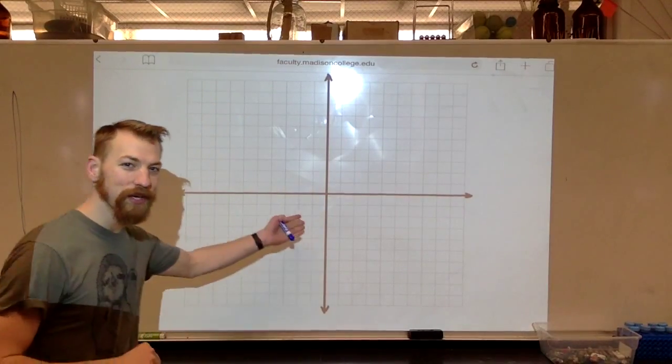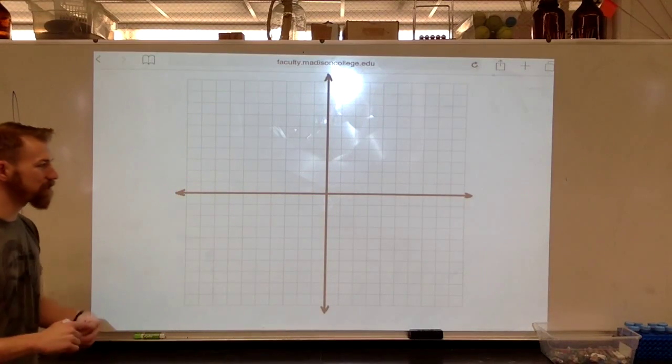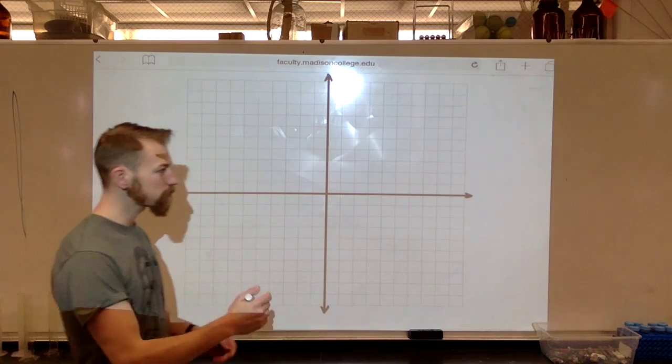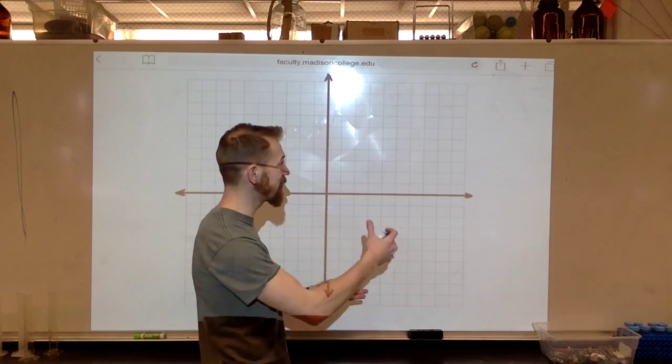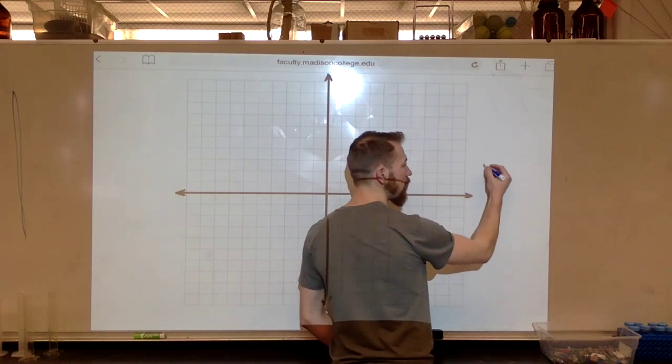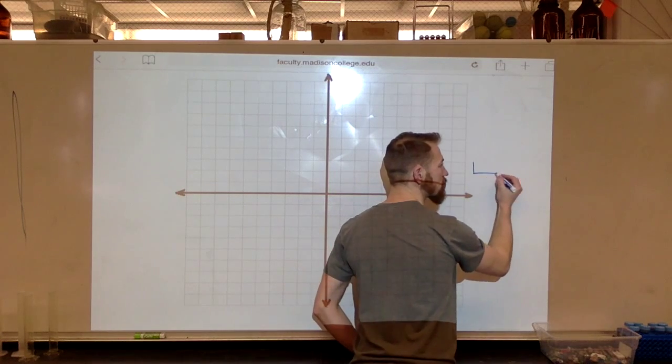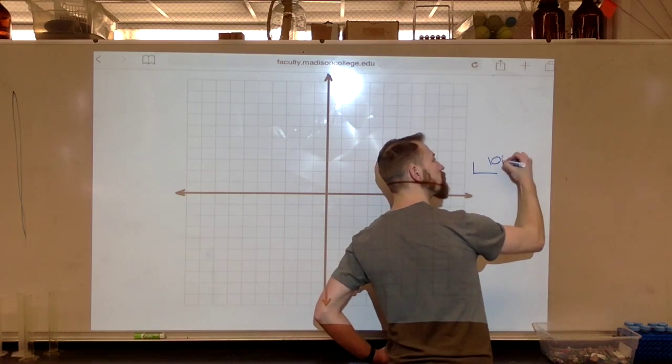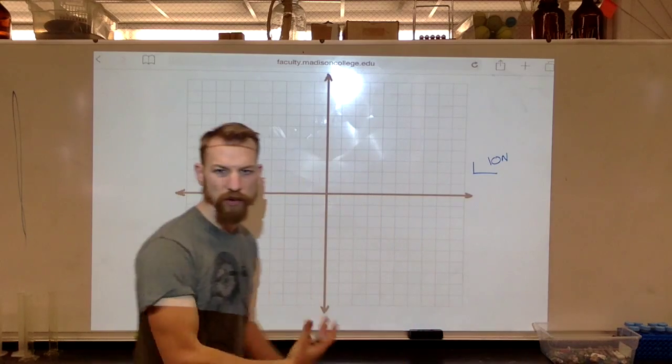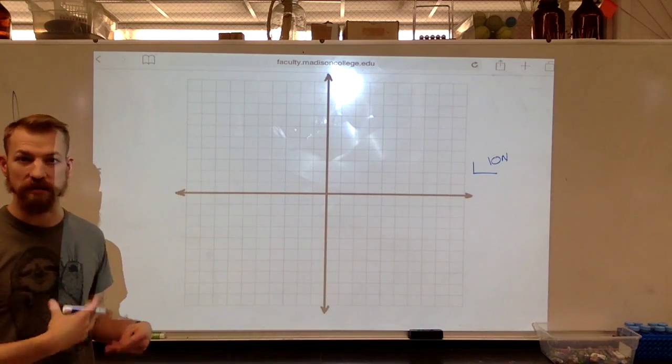Okay, so here is life as graph paper. Let's say that in this scenario, each one of these boxes, so one box is 10 newtons of force. Okay, we'll just start by giving this graph some scale.